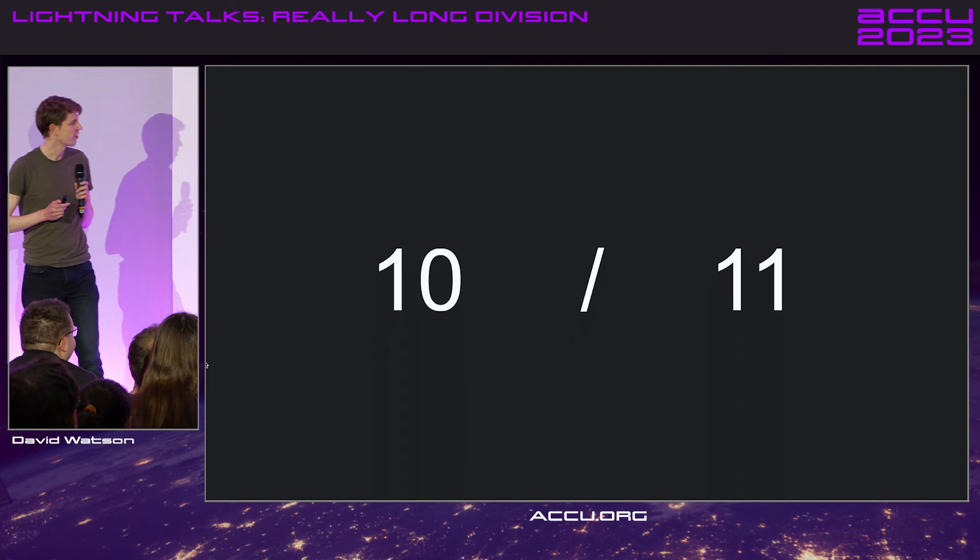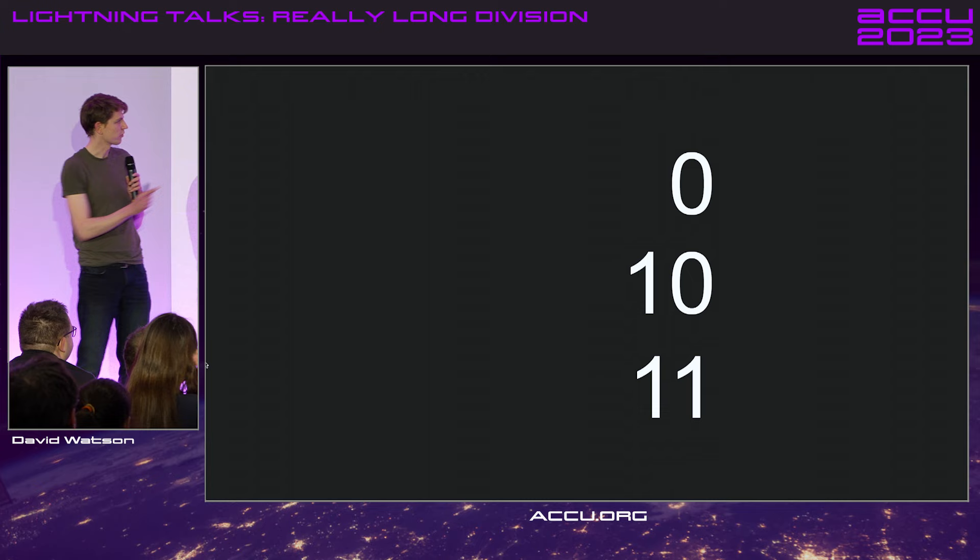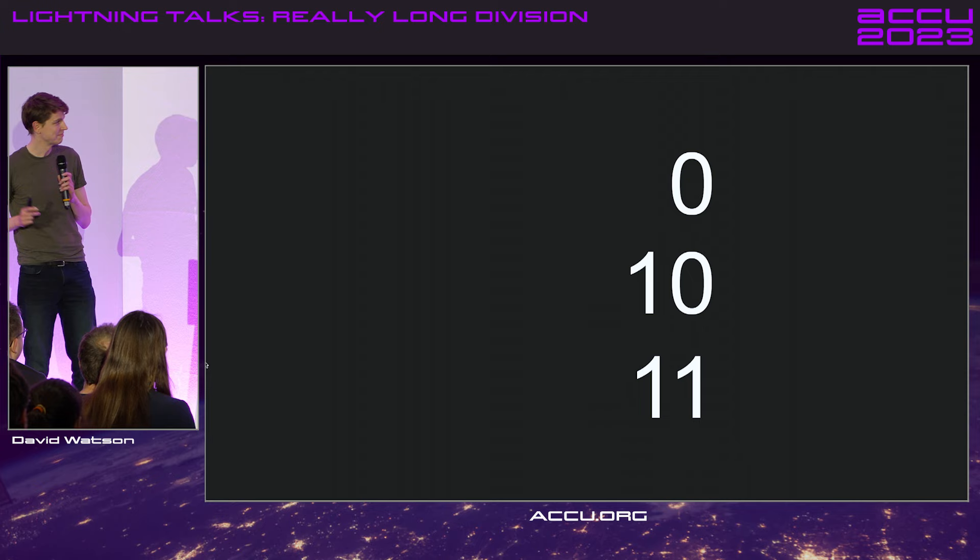So we've got at the top the result that we're computing. We've got two in the middle — that's the numerator that we're going along with. And we've got the denominator at the bottom that we're going to be shifting across.